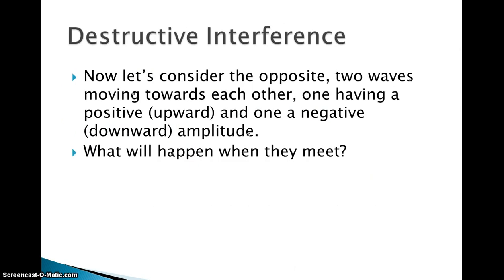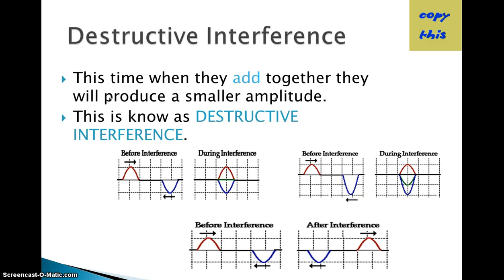Destructive interference is the opposite. If one wave has a positive upward amplitude and another has a negative amplitude, when they meet they are destructive. You can see the red moving to the right, the blue moving to the left, and when they meet they cancel each other out.